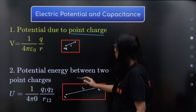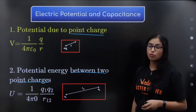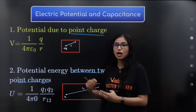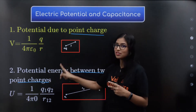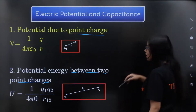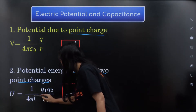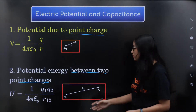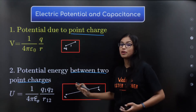The potential energy between two point charges. U is equal to 1 by 4πε₀ into q1 q2 divided by r12. So the potential energy between two charges q1 and q2 separated by distance r12 is given by this formula.